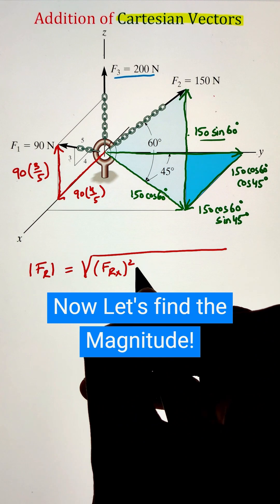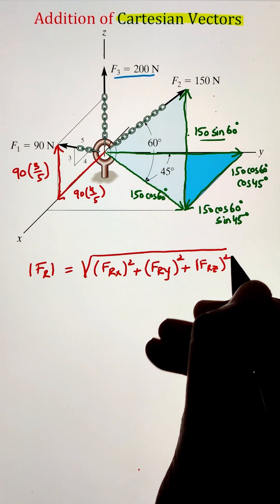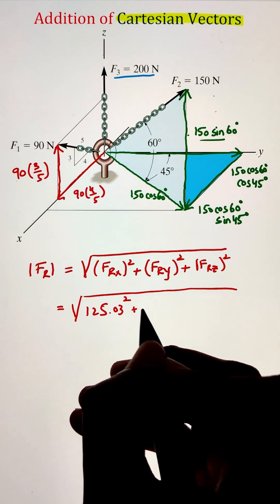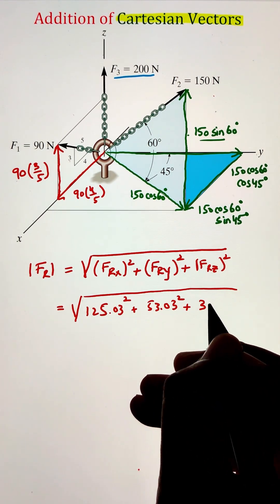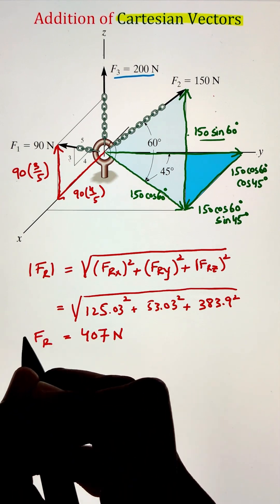Now, in order to calculate the magnitude of the resultant force, we have to take the square root of all the square terms along the X, Y, and Z axis and add them together. This gives us our magnitude of 407 Newtons.